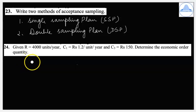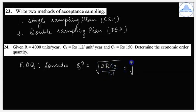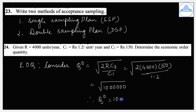24th question: given R = 4000 units/year, C₁ = Rs. 1.2 per unit per year, and C₃ = Rs. 150, determine the economic order quantity. This question is from inventory theory, model 1 without shortages. The formula for EOQ, Q⁰ = √(2RC₃/C₁) = √(2 × 4000 × 150 ÷ 1.2) = √(10 lakhs). Therefore Q⁰ = 1000 orders.